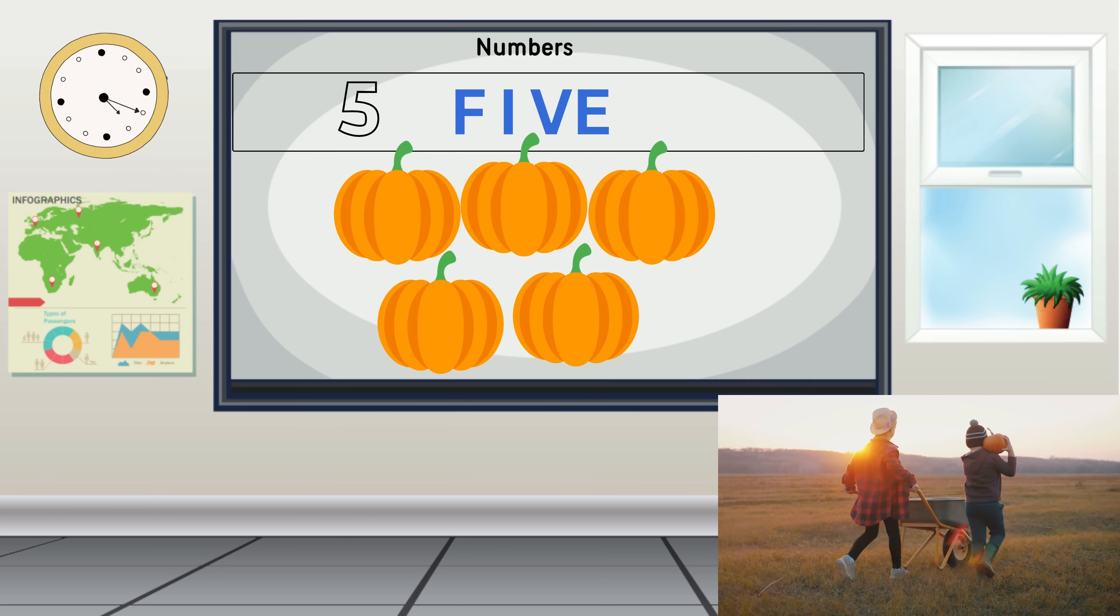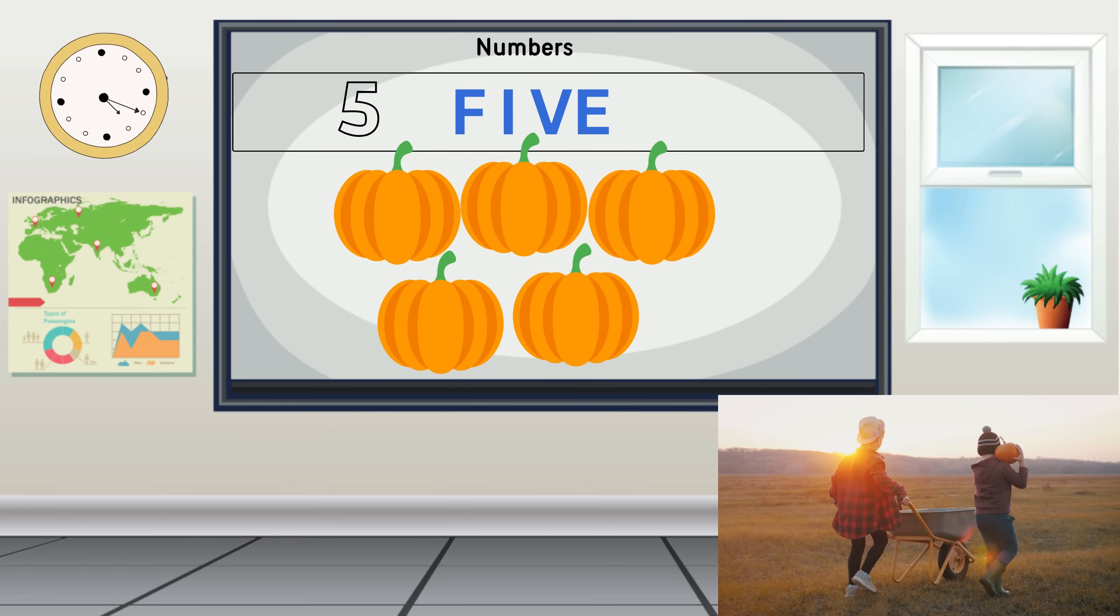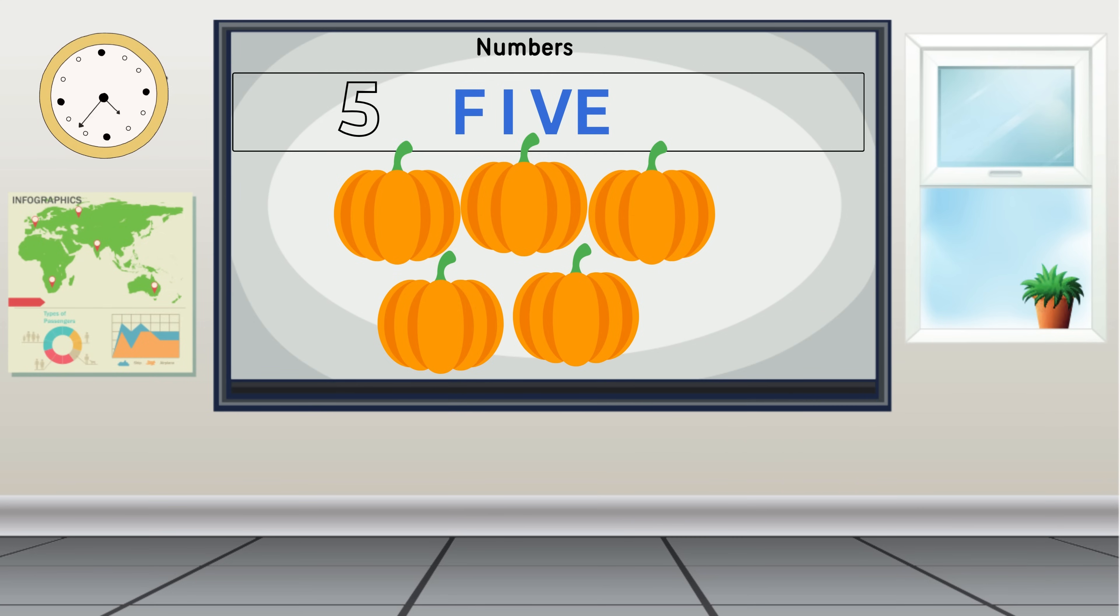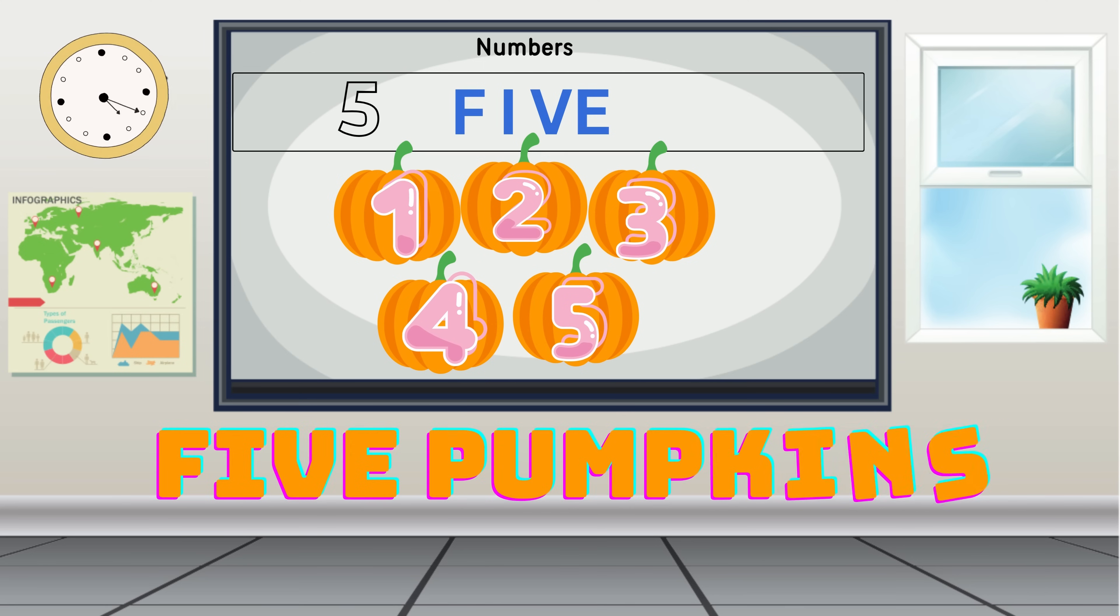Now let's help our friend Pete. He wants to know how many pumpkins his friend got from the pumpkin patch. Are you ready to count along? Great, let's begin. Can you point to each pumpkin as we count together? One, two, three, four, five. Pete's friend got five pumpkins. Fantastic, you're doing an amazing job.